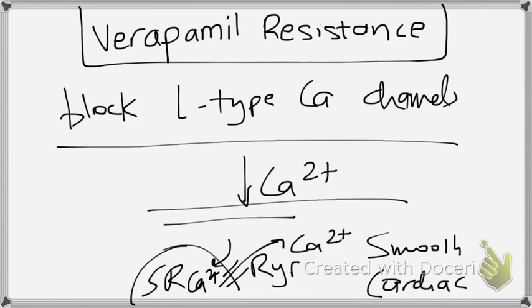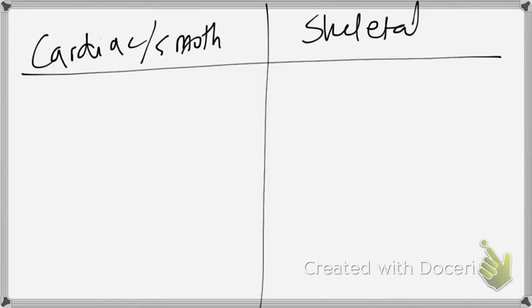Right? So this is the normal physiology of how calcium causes calcium release from sarcoplasmic reticulum and how it causes contraction of the muscles. Now the problem is, this is the case for smooth muscles and cardiac muscles.